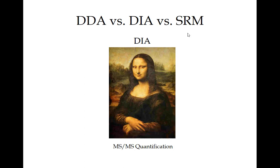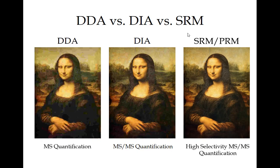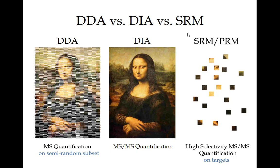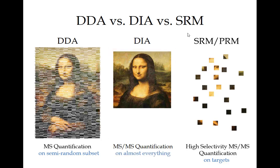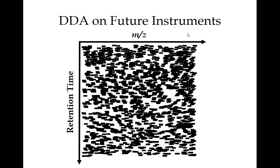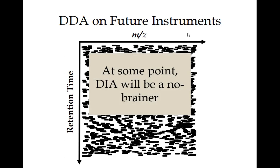To wrap this all up: thinking about DIA versus SRM/PRM versus DDA. SRM/PRM gives you really high-quality measurements on a predetermined subset of your sample. DDA does stochastic sampling, covering a lot of peptides but possibly missing some. DIA acquires comprehensive measurements on a subsection. As instruments scan faster and faster, even if you don't agree with DIA, you're going to accidentally start doing it eventually because you'll just cover everything. At some point DIA will be a no-brainer — it just depends on how narrow those isolation window widths need to get to have the necessary quality.